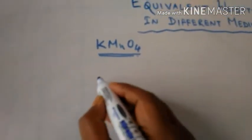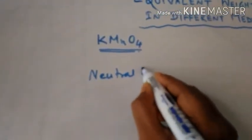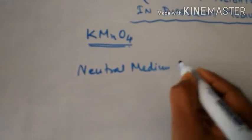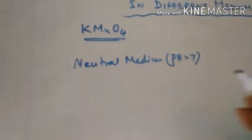Now we are going to calculate the equivalent weight of KMnO4 in neutral medium. Neutral medium means pH equals 7. In neutral medium, KMnO4 actually reacts to form...